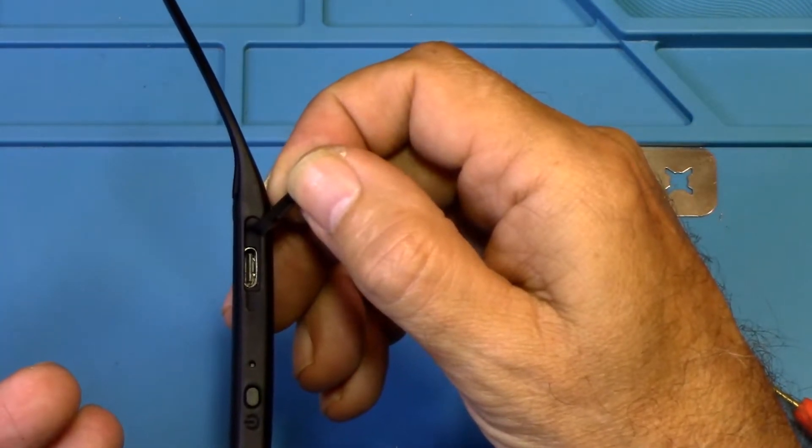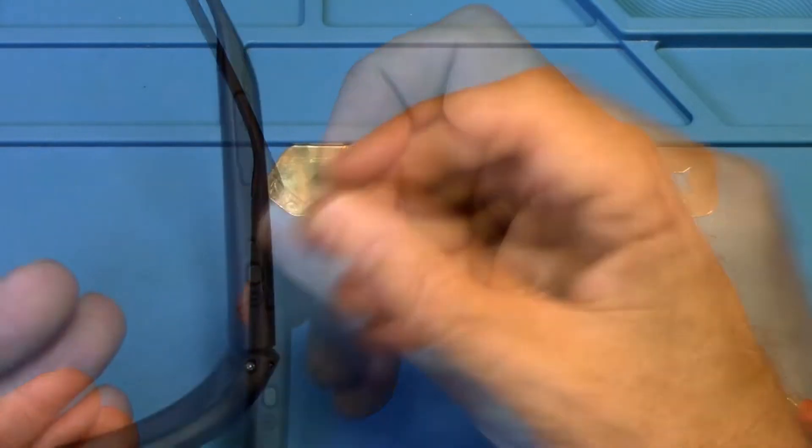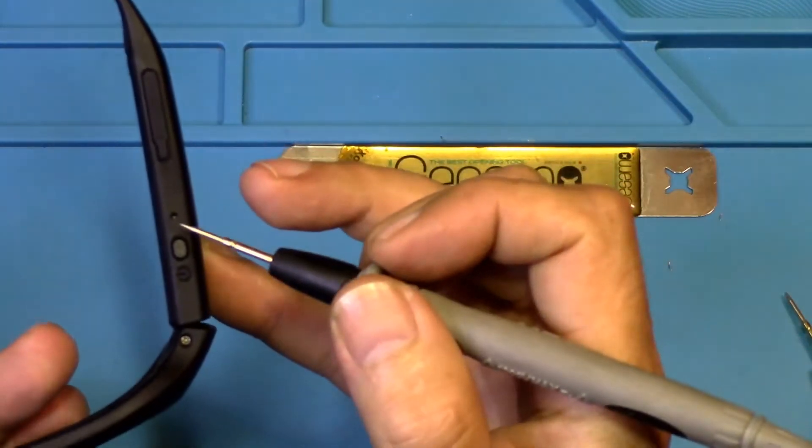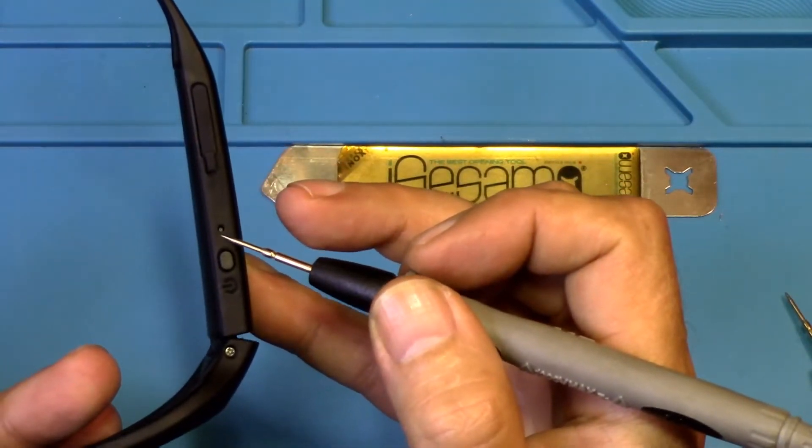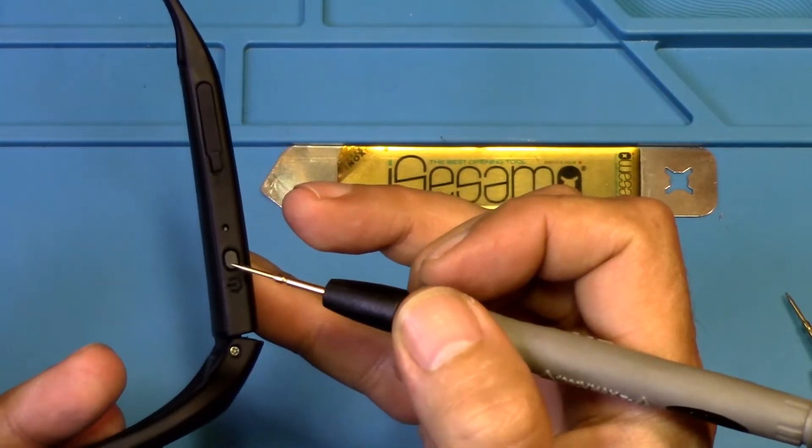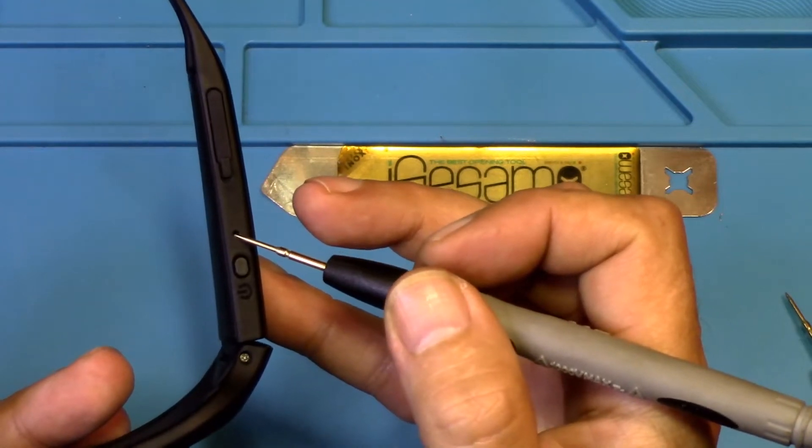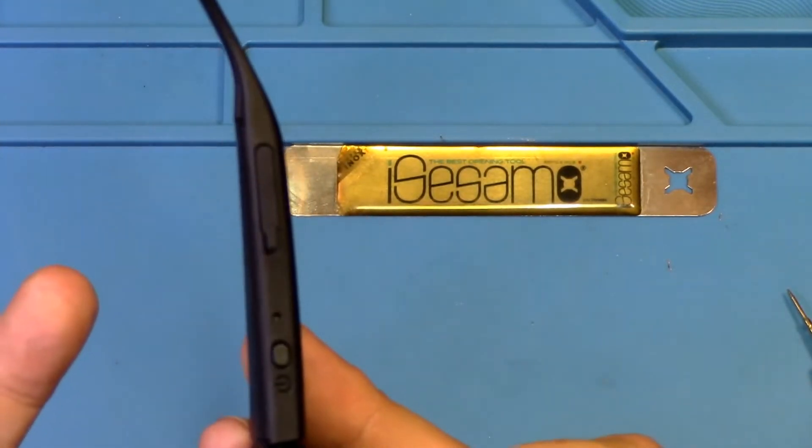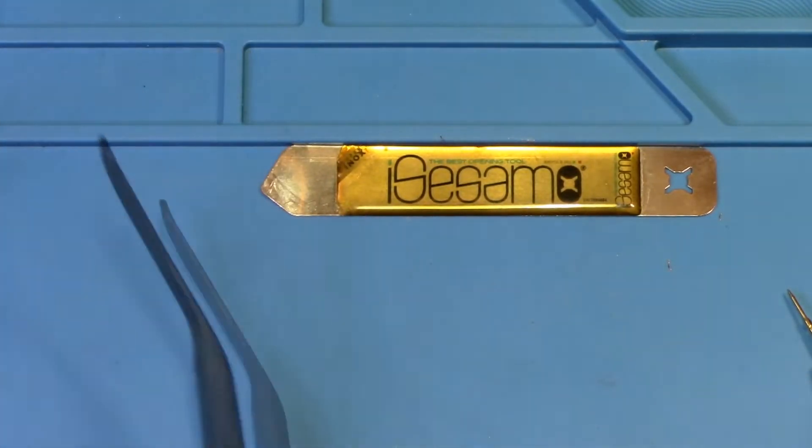In case somebody doesn't know, if you're having issues with your glasses, the first thing you want to try is this right here - there's a little hole beside the power button, it's a reset button. You have to stick something in there and push it to reset it. That would be the first thing you might want to try if you're having issues.